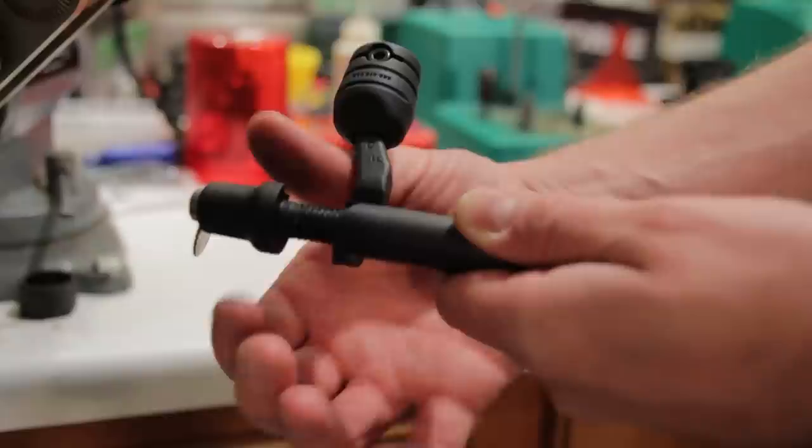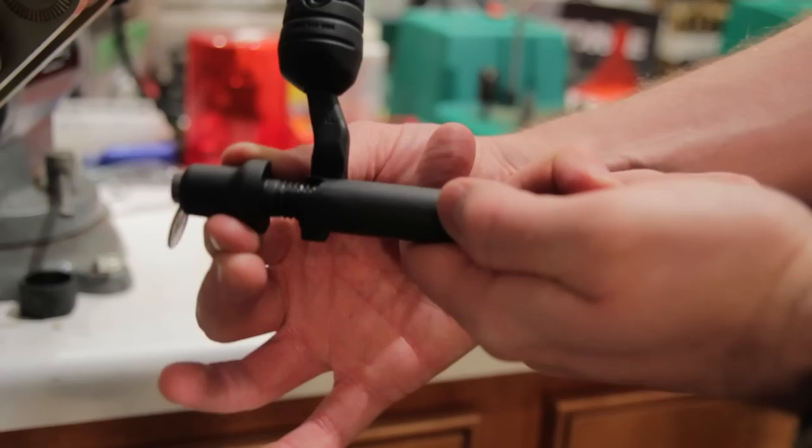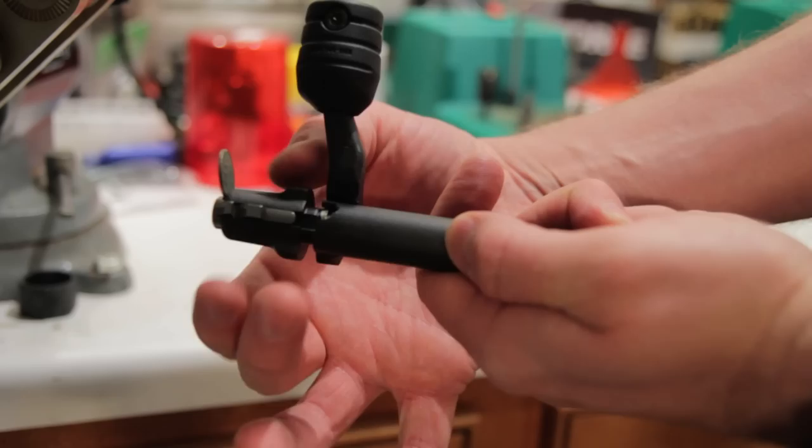Once you've unscrewed the firing pin assembly, that's really as far down as it needs to go for any kind of field cleaning or inspection. You wipe off the spring, wipe off the firing pin assembly, blow out the bolt body, and get that cleaned out.